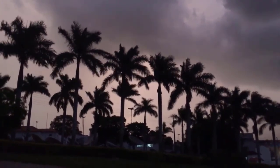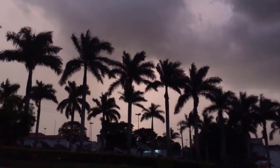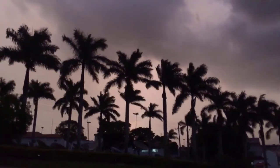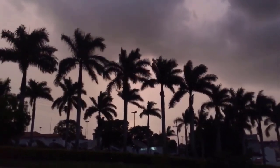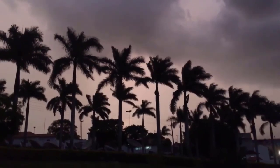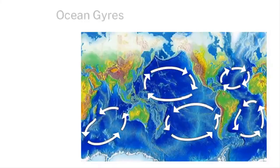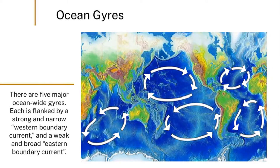The heat transported by the oceans tends to do so by way of very large-scale, basin-scale ocean gyres that exist in each of the major global ocean basins.